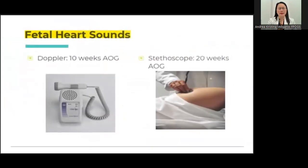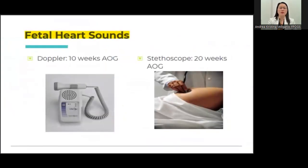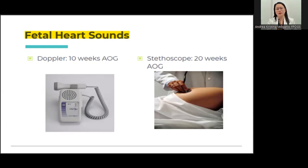For fetal heartbeat, if you have a very good high-end Doppler, you can appreciate the fetal heart rate as early as 10 weeks. Lower-cost Dopplers may start hearing the fetal heart rate at around 16 weeks. Using a regular stethoscope, you can hear the fetal heart rate at around 20 weeks.